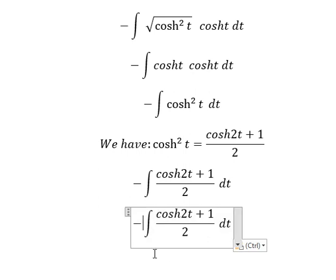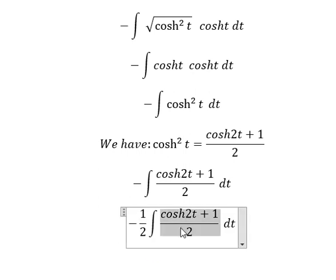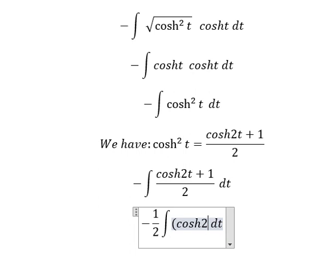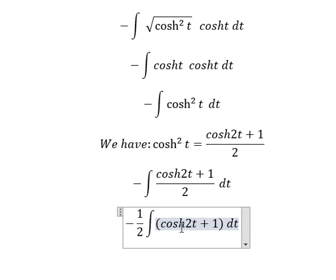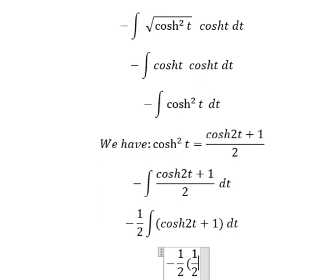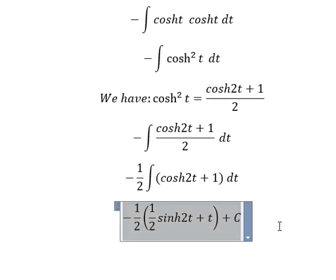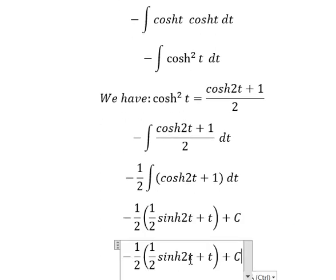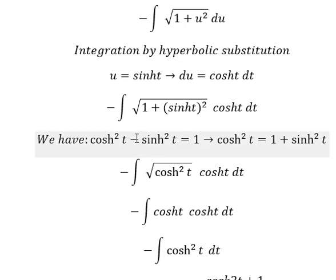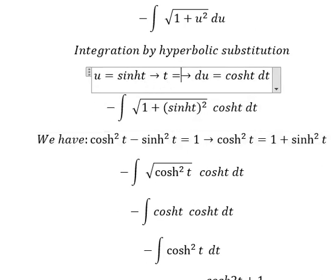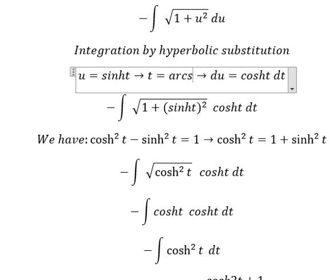I will put the two outside, and that gives us cosh(t) plus one. The integration of cosh(t) is one-half sinh(t). The number one integrates to t, and I will add the constant C. So t equals arcsinh(u).